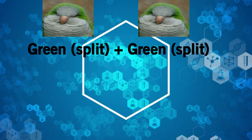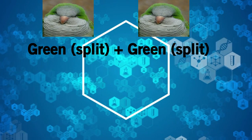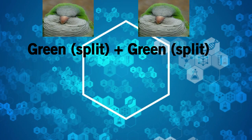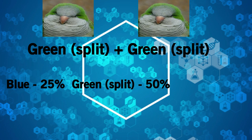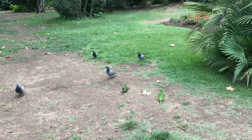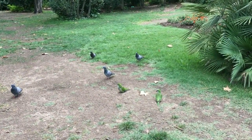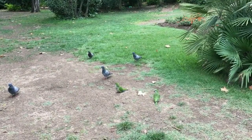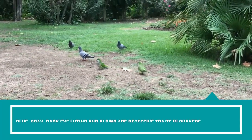If you breed two normal green quakers which are both split to blue, you will get a percentage of offspring which will be blue — generally 25% — greens which are split to blue at 50%, and normal greens at 25%. The only way to determine if green birds are normal or split to blue is to breed them and see what color the offspring will be.